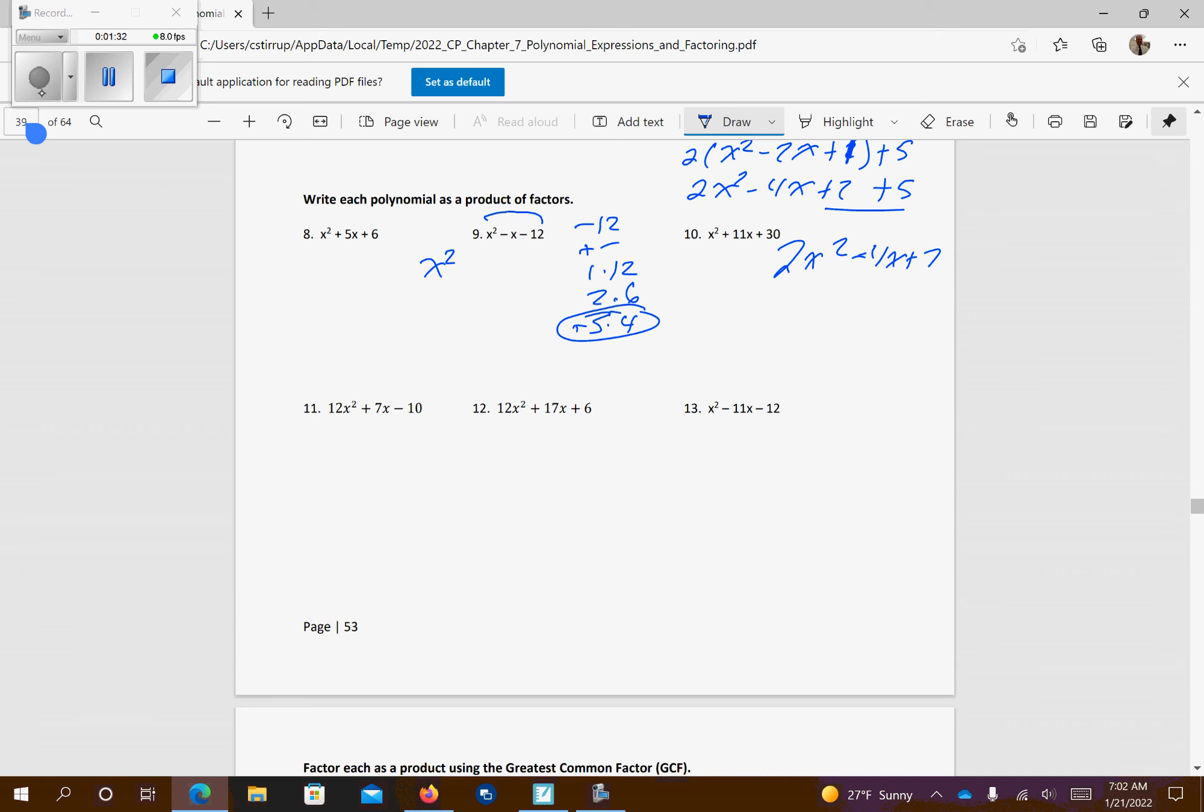So I'm going to get x squared plus 3x minus 4x minus 12. Factor out x there, so I have x plus 3, factor out a negative 4 there, so I'm going to get x plus 3. x plus 3s match, so we're going to have x plus 3 up front, x minus 4, here's our answer.